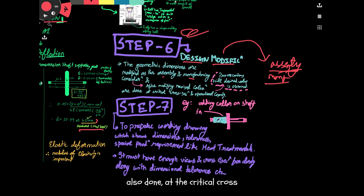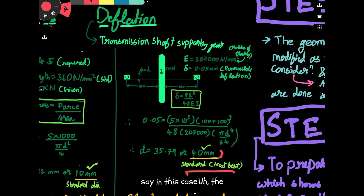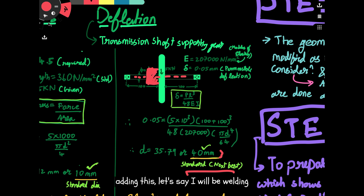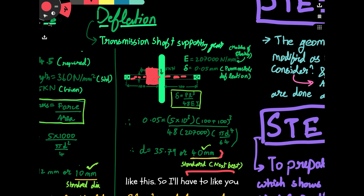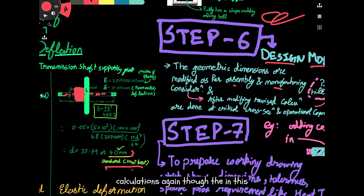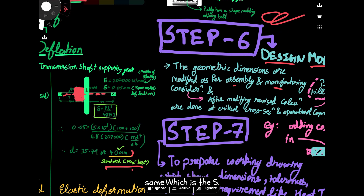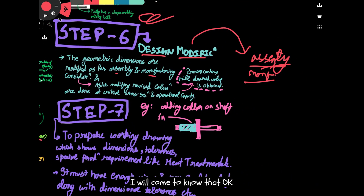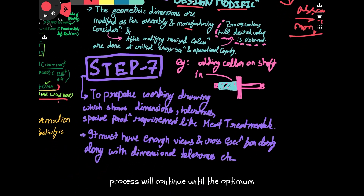After modification, revised calculations are done at the critical cross-section areas. For example, a gear will be seated with the help of a sleeve, whose cross-section area is more than the shaft's cross-section. If welding or turning is done — the initial diameter changes to a final diameter — recalculations must be done. The critical diameter remains the same, but you must verify this. This process continues until the correct solution is obtained.